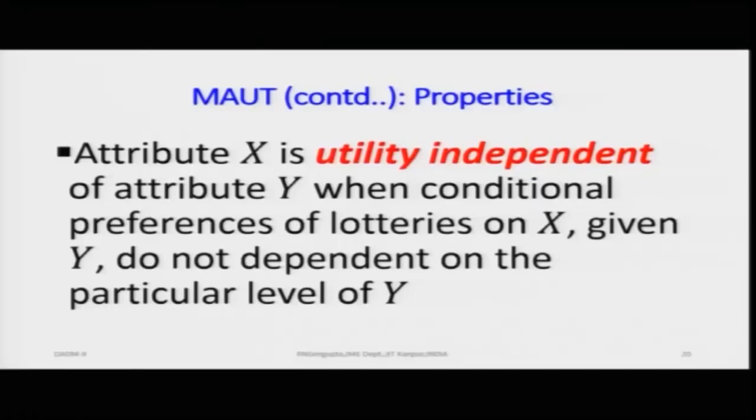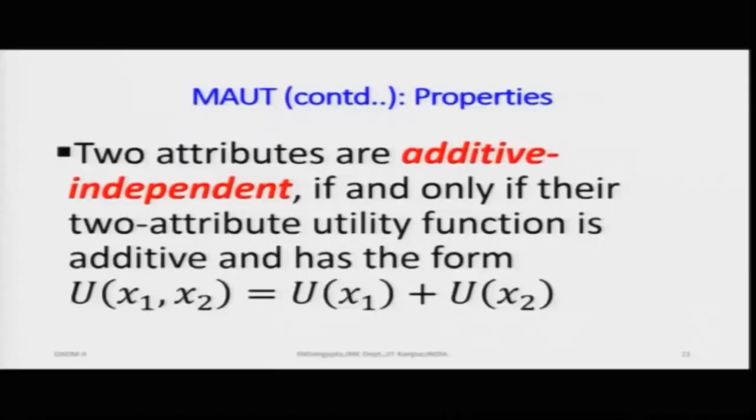Utility independence: X is independent of attribute Y when the conditional preferences of the lotteries on X given Y do not depend on the particular level of Y — meaning they can be expressed as multiplicative factors. Two attributes are additively independent when the utility function U(x1 ... xn) can be expressed as the sum u1 + u2 + ... + un, such that any two bundles X1 and X2 can be expressed as a combination of u1 and u2 up to n different combinations.